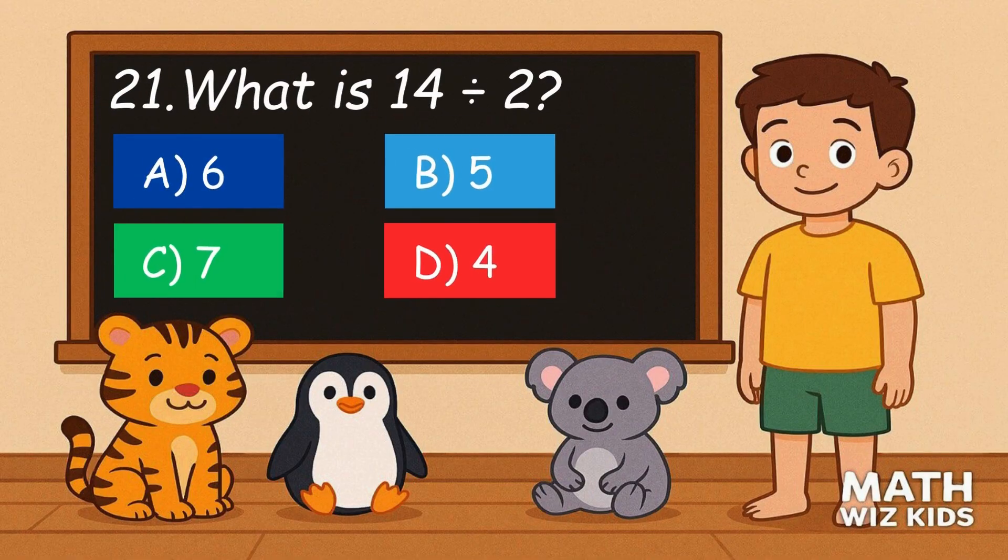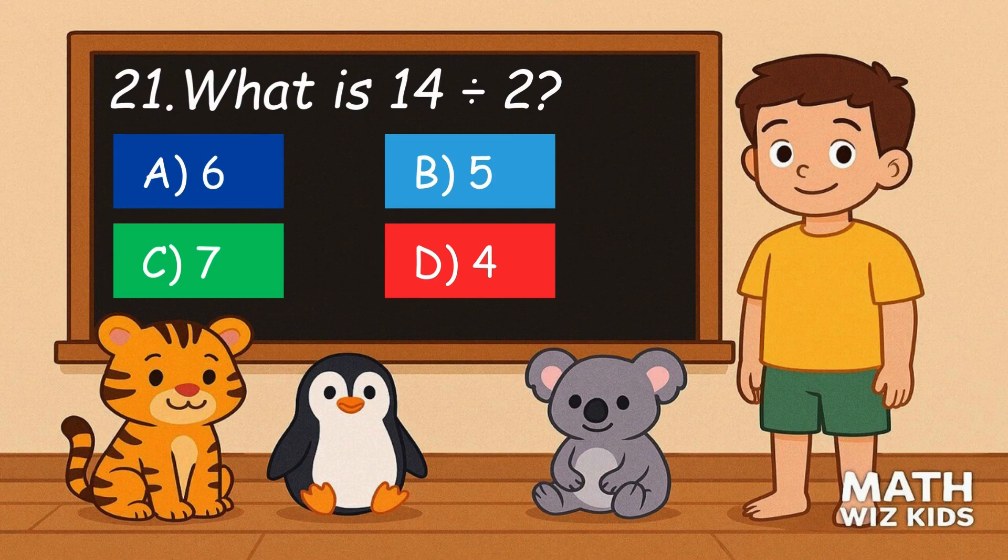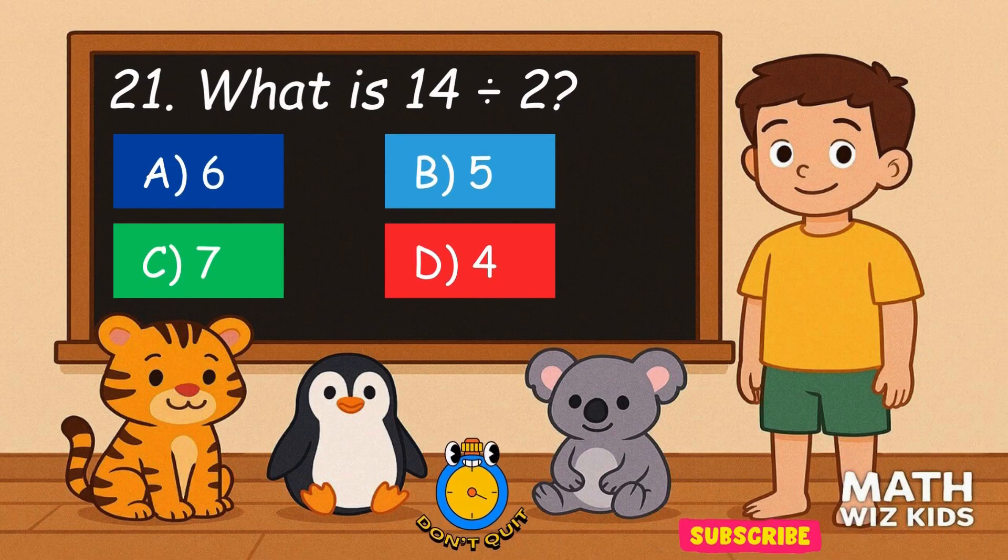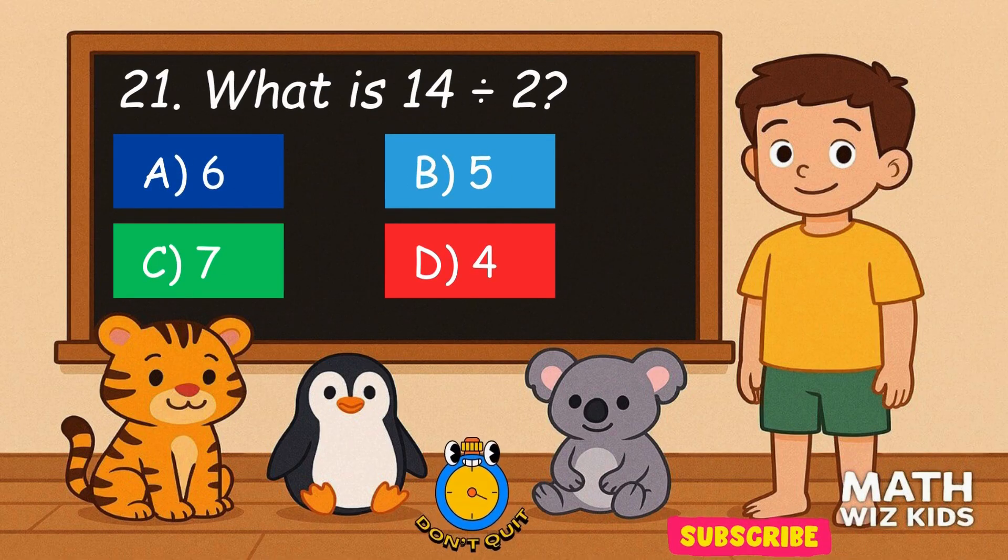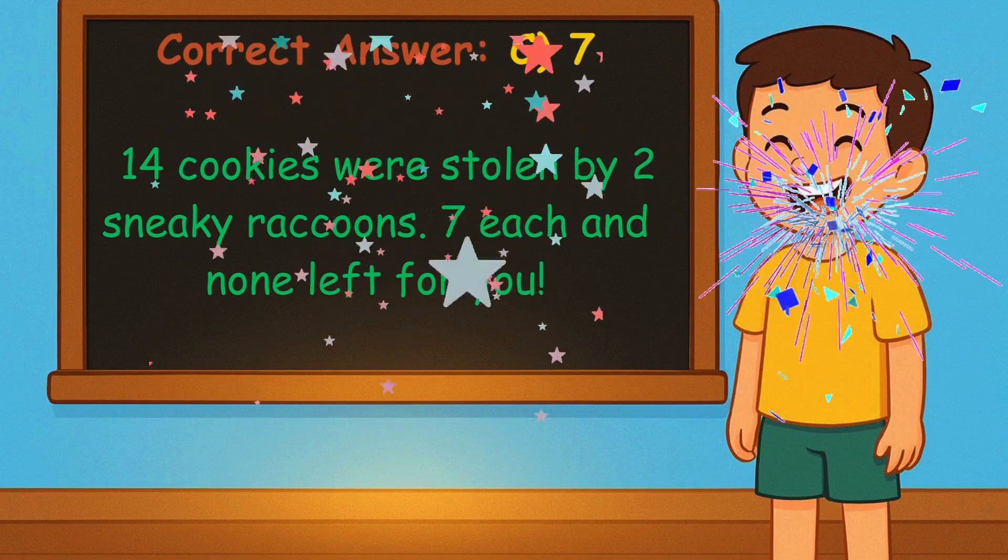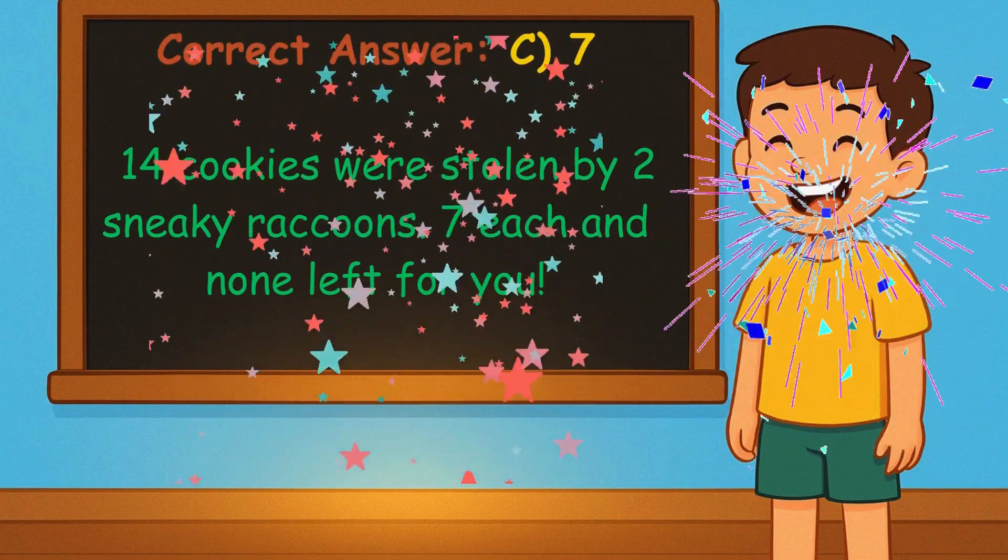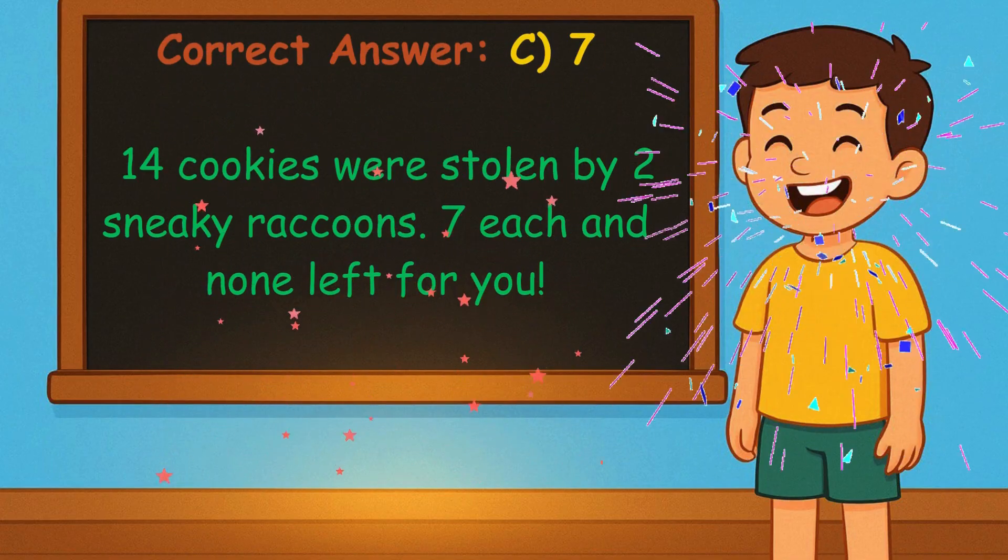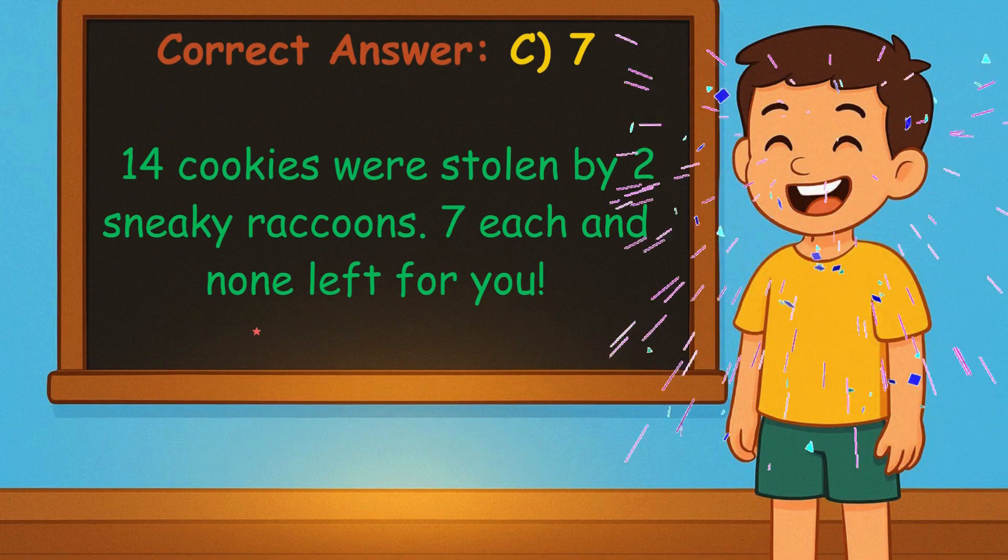21. What is 14 divided by 2? Is it A, 6, B, 5, C, 7, or D, 4? Correct answer is 7. 14 cookies were stolen by 2 sneaky raccoons. 7 each and none left for you.